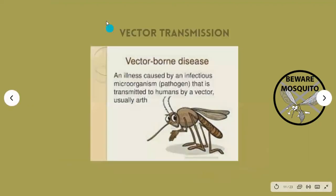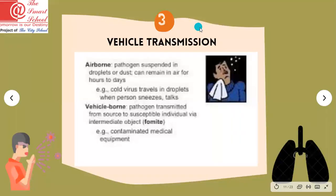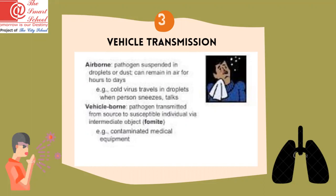The third method of transmission is vehicle transmission, such as airborne diseases. Pathogens suspended in droplets or dust can remain in the air for hours to days and cause several types of diseases. For example, the cold virus travels in droplets when a person sneezes or talks, and the virus then travels through the air to infect another person.